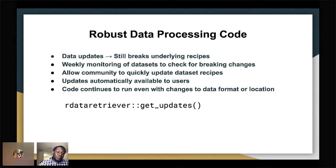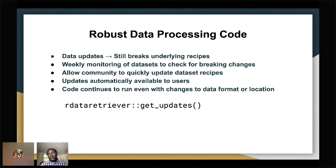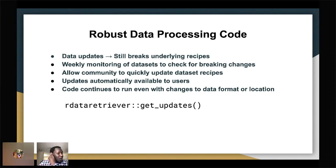When a recipe is fixed, we automatically send updates to users. You can go into your R Data Retriever tool, run get updates, and it will tell you what has been updated. It continues to run reliably even with changes in data, format, or location. This is valuable because instead of everyone developing their own packages, we have one standard platform that cleans the datasets with a community maintaining it — a great tool for reproducing science and optimizing the workflow.